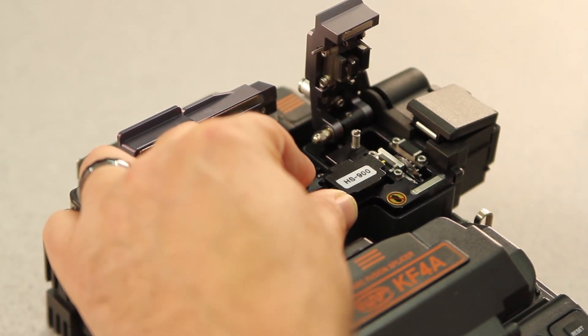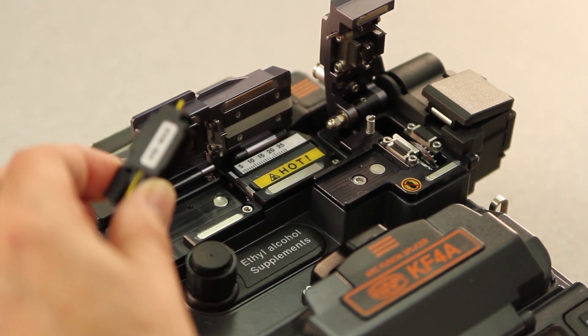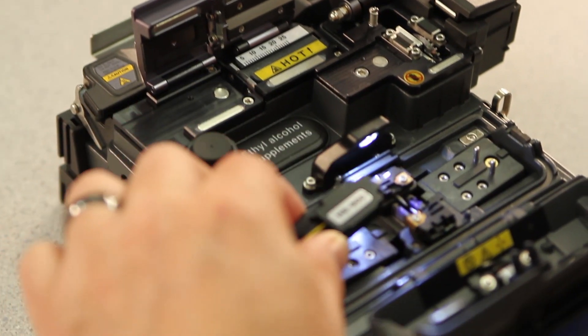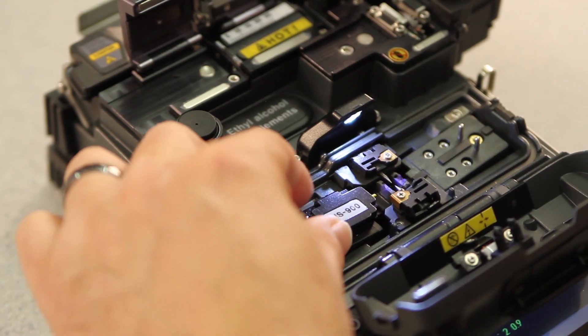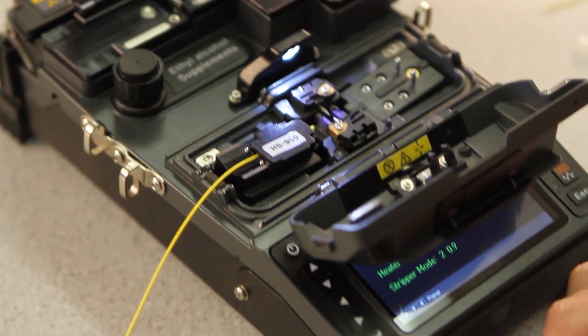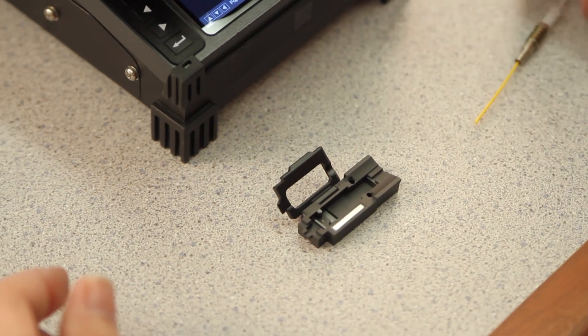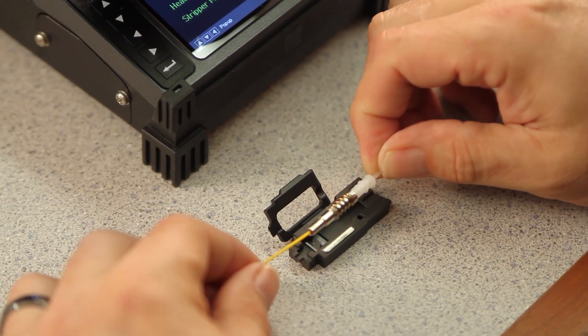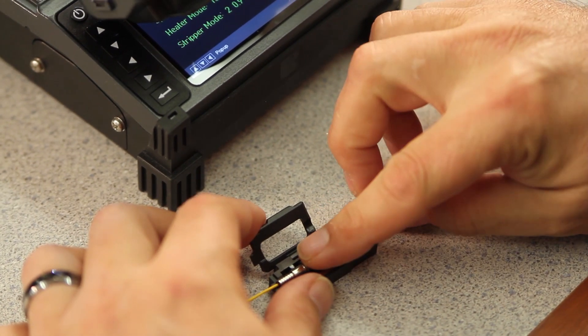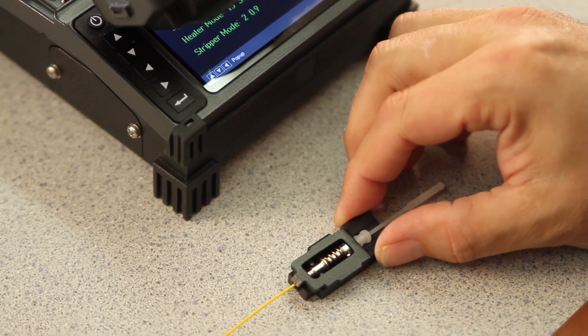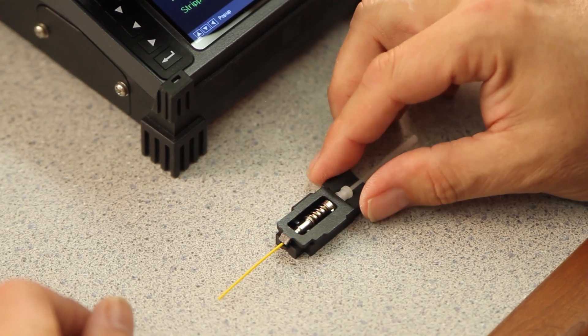Again, opening your cleaver door until it's fully engaged. Remove your holder and place in your splicer. Next, take your connector holder, open your door, and place your connector inside. Close your door, it should close freely.